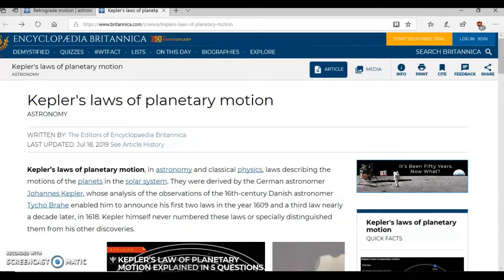Enabled him to announce his first two laws in the year 1609 and a third law nearly a decade later in 1618. Kepler himself never numbered these laws or specially distinguished them from his other discoveries. Okay thanks for your honesty. So somebody came along probably hundreds of years later and went through his books and decided to make them law.